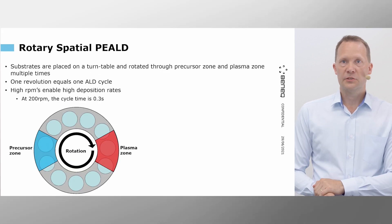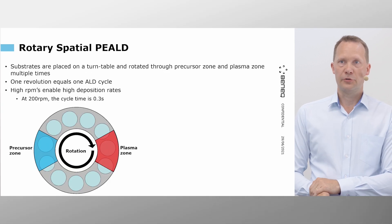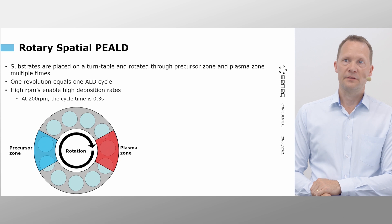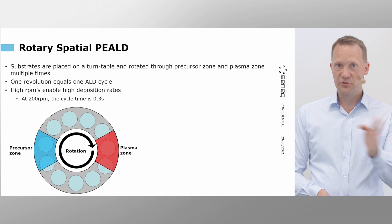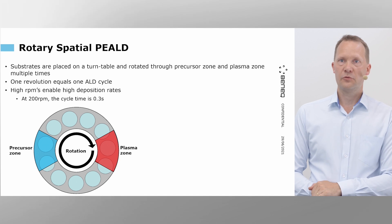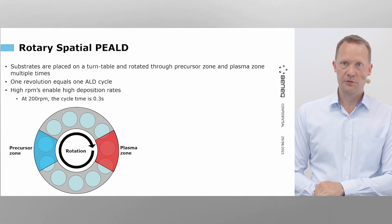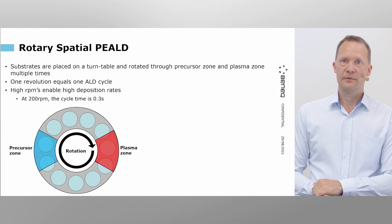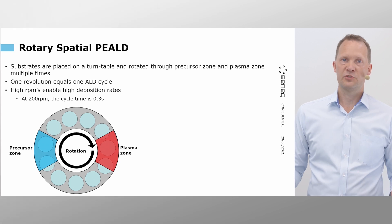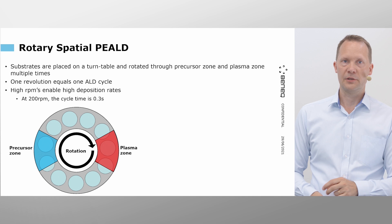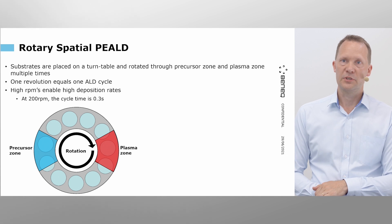It offers high film thickness uniformity, which makes it especially suitable for optical coating applications that demand thick films and high uniformities. Substrates are placed on the turntable and are rotated through the precursor zone and plasma zone multiple times during the process — one revolution equals one ALD cycle. This allows relatively high RPMs compared to the traditional pulsing of gases, which enables high deposition rates.